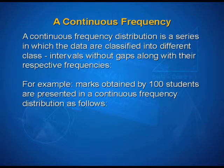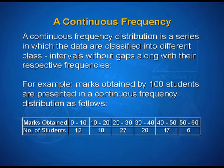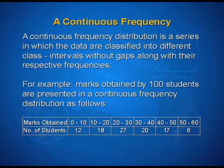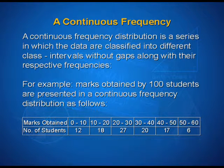For example, marks obtained by 100 students are presented in a continuous frequency distribution as follows. Marks obtained range from 0 to 10, 10 to 20, 20 to 30, 30 to 40, 40 to 50, and 50 to 60. The corresponding number of students are 12, 18, 27, 20, 17, and 6. That means 12 students got marks between 0 to 10, 18 students secured marks between 10 to 20, and 27 secured marks between 20 to 30, and so on.